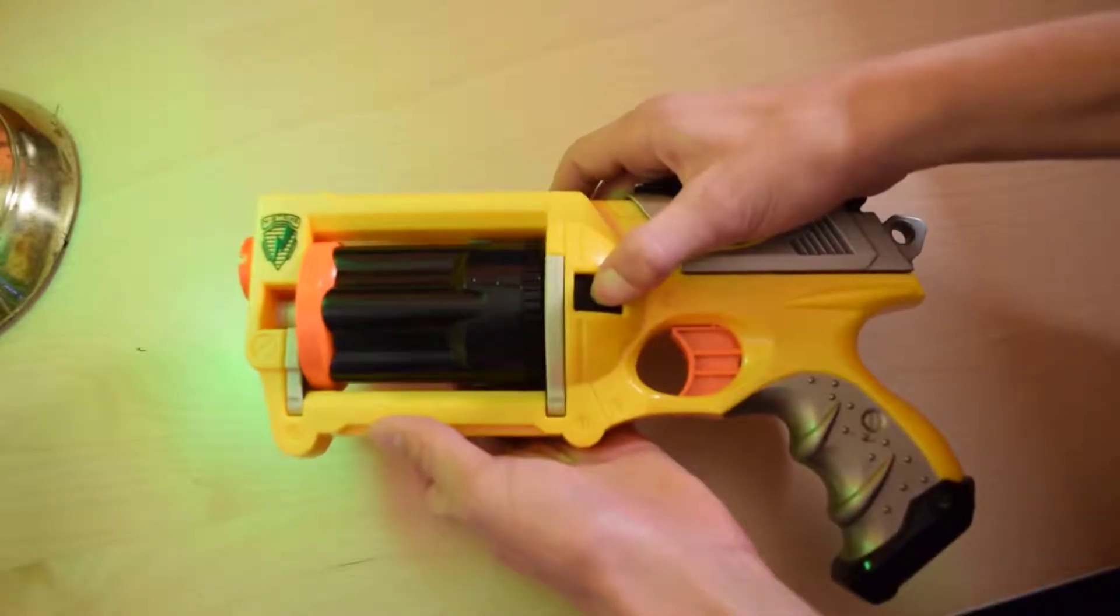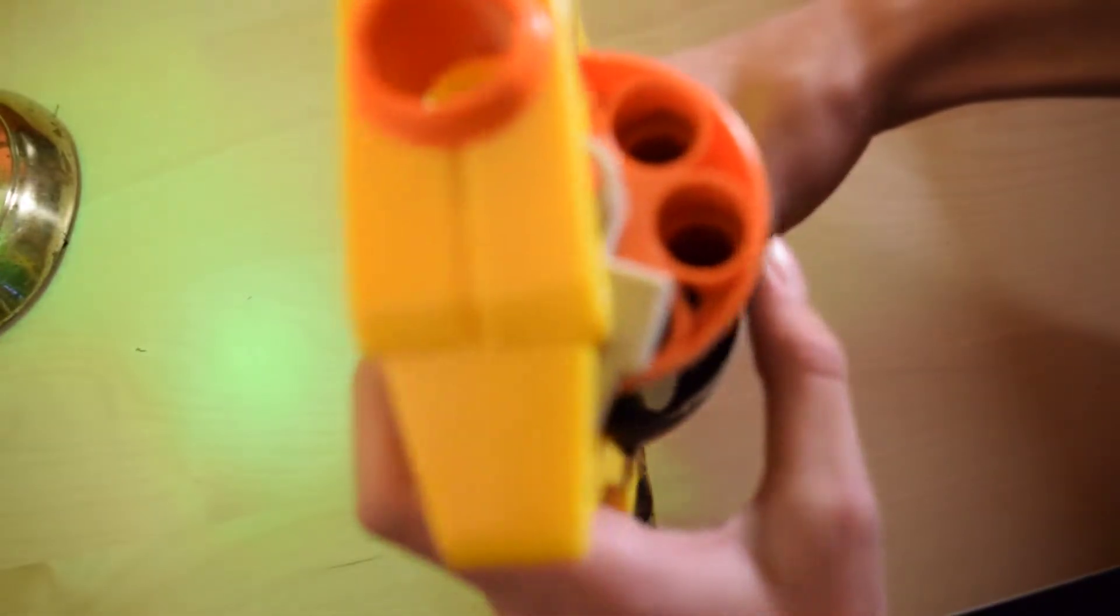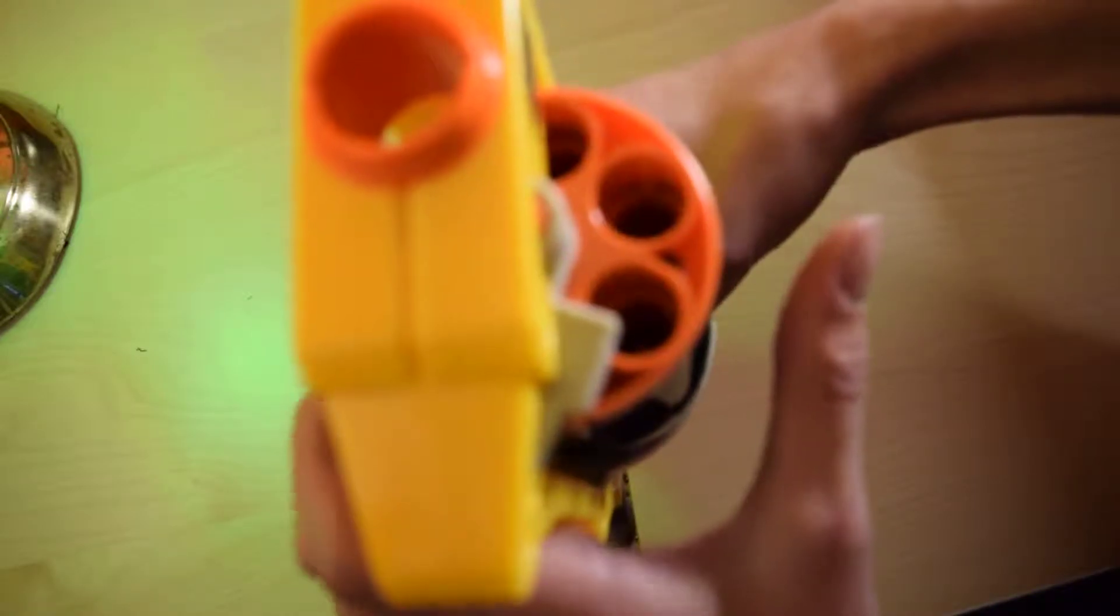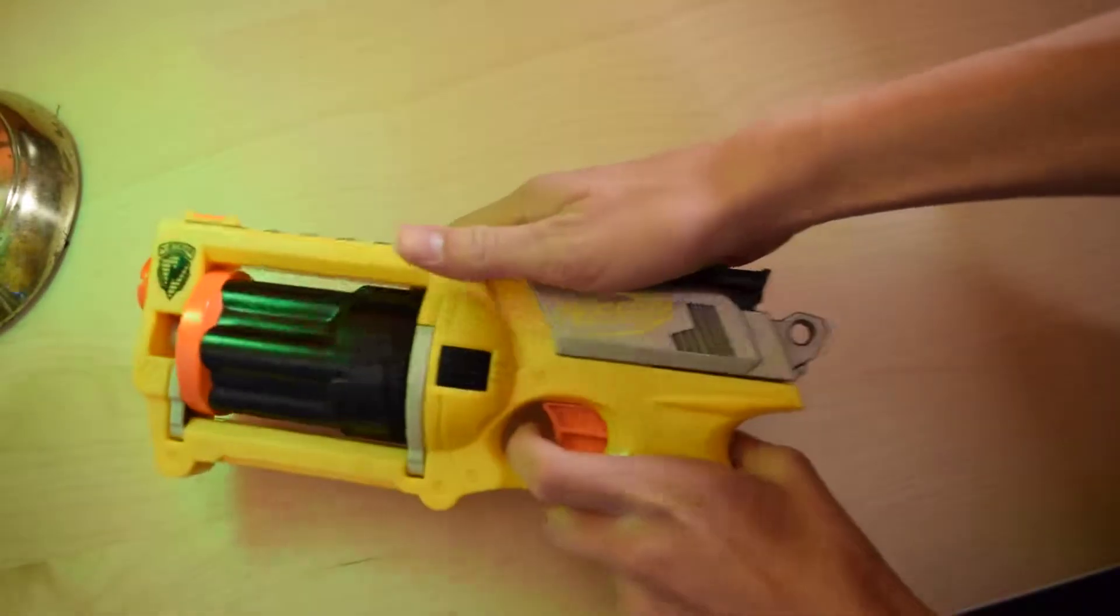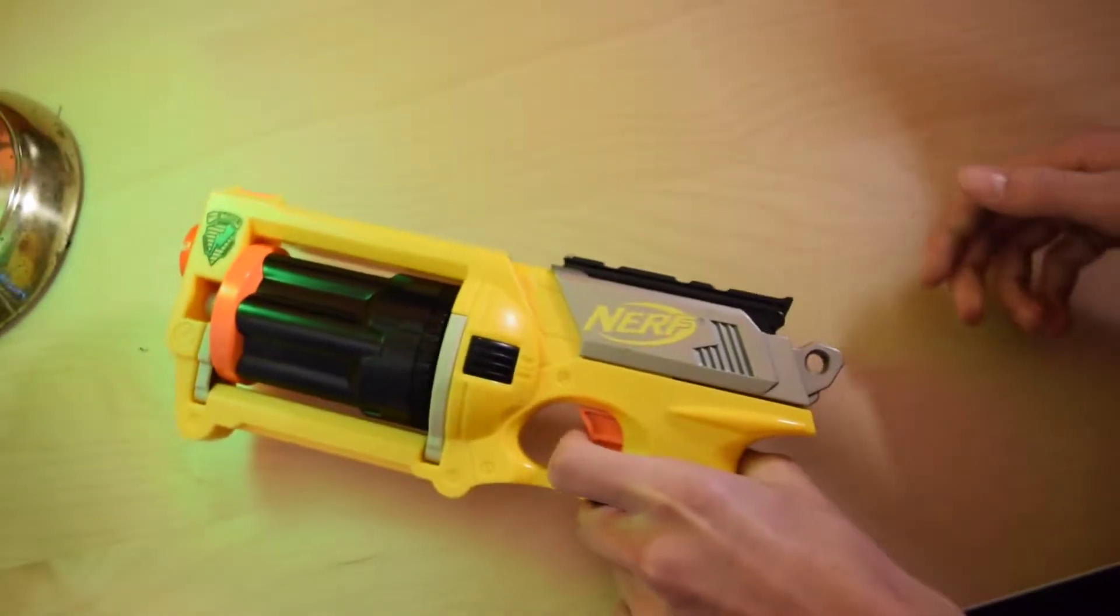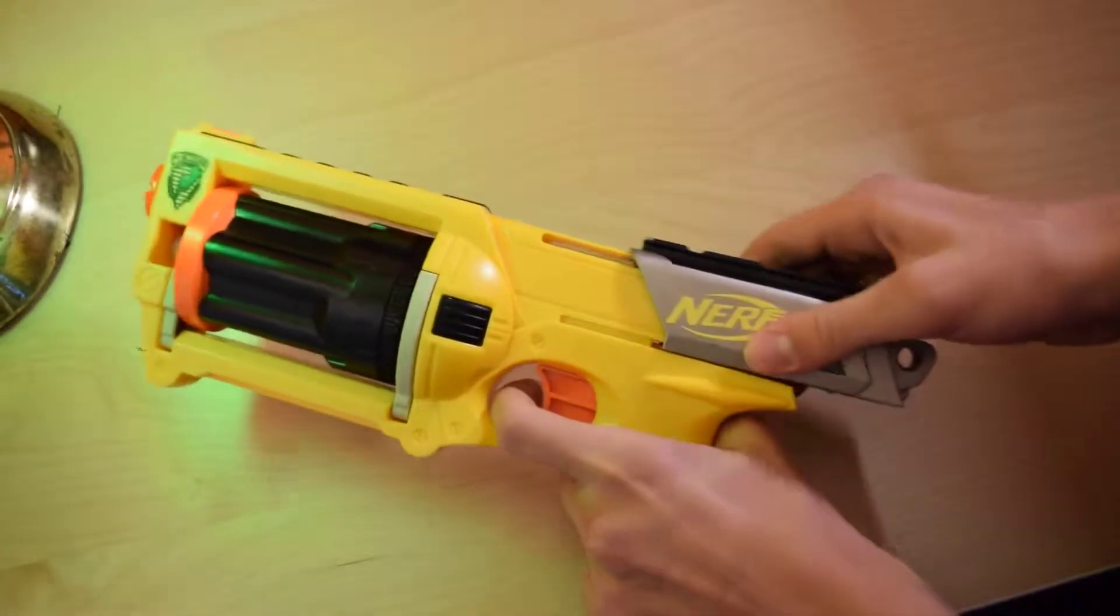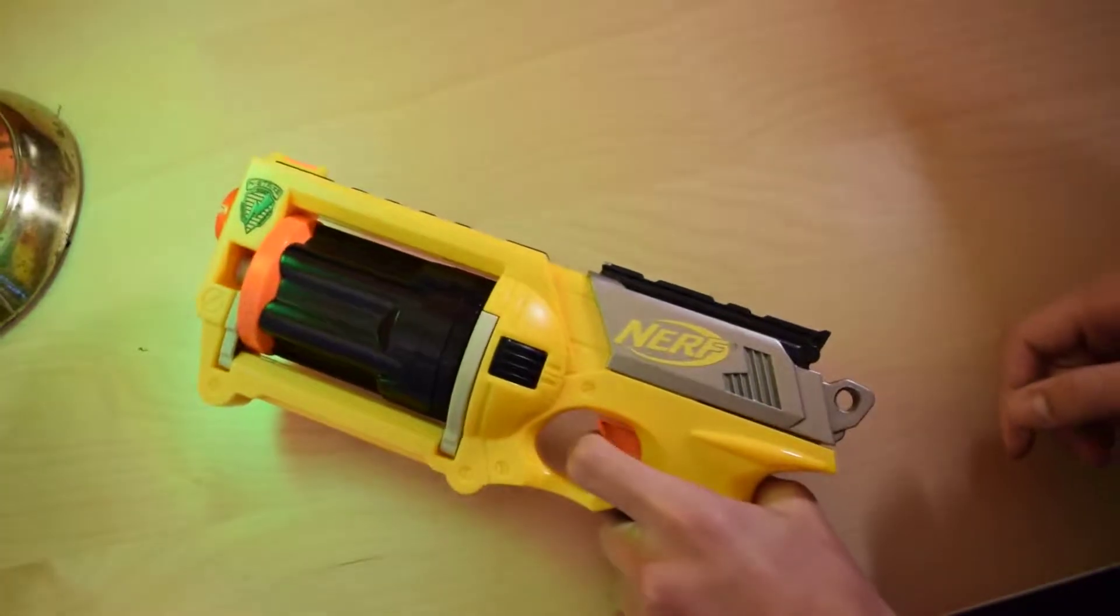You push this button on the side, which pops out the cylinder, and then you can front load six darts. It exposes around two barrels at a time. Then you push the cylinder back in, pull back on the priming handle, and pull the trigger to fire once. Every time you pull the trigger, it rotates the cylinder automatically for you.